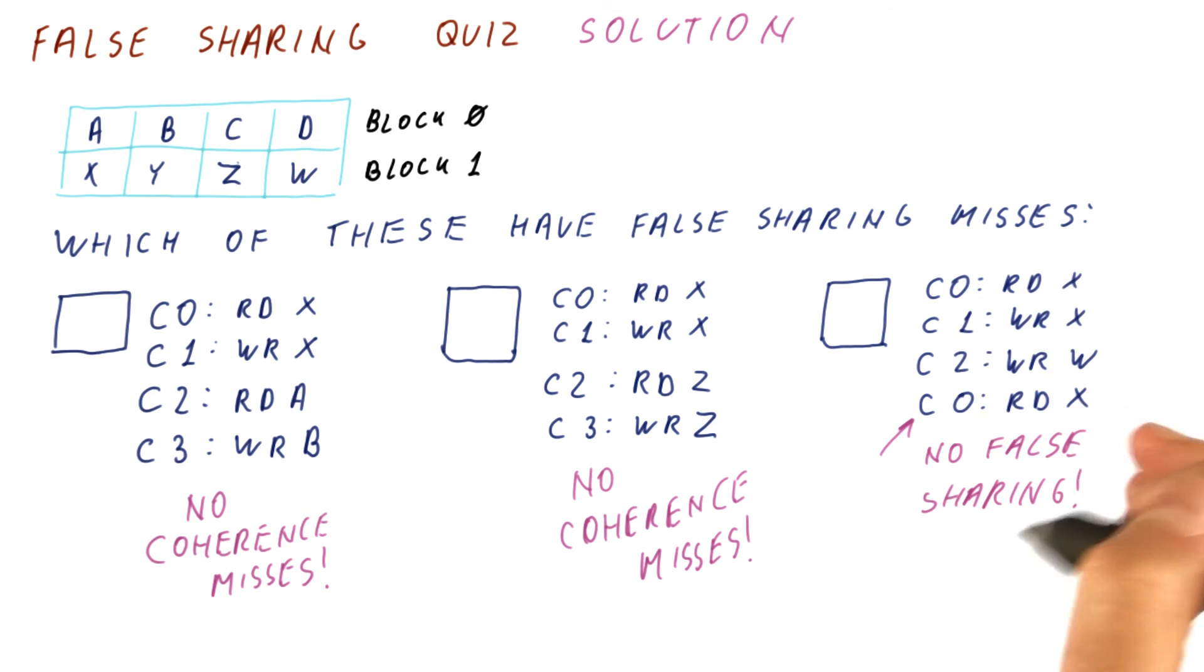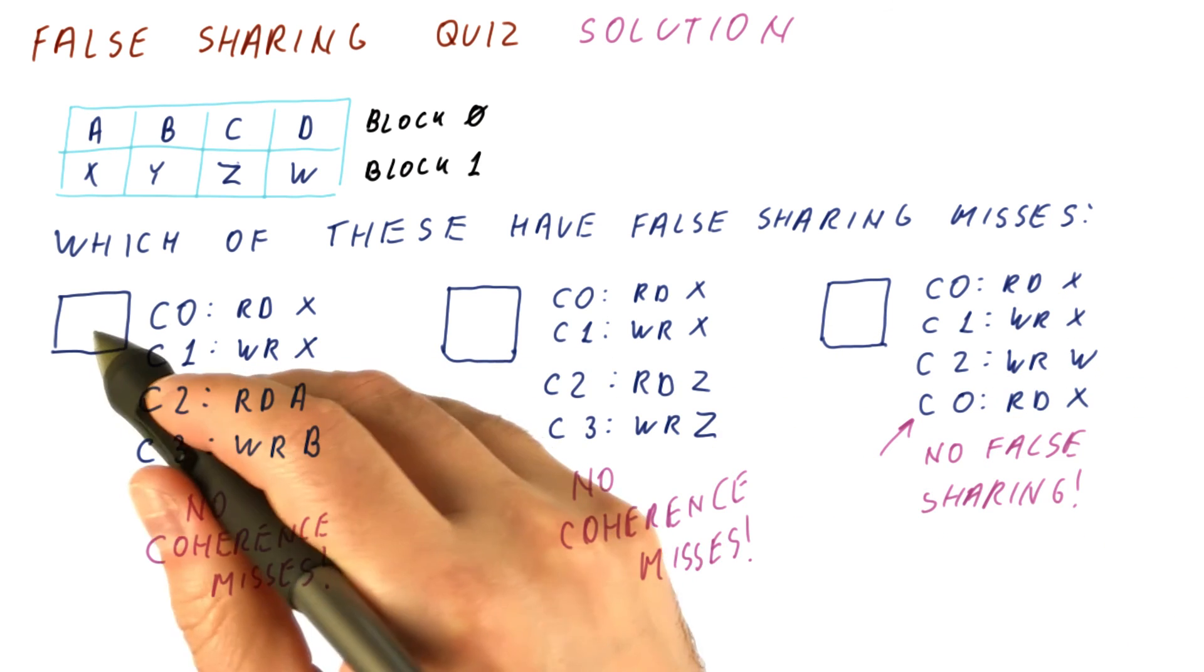So in this sequence, there is also no false sharing. So none of these should have been selected.